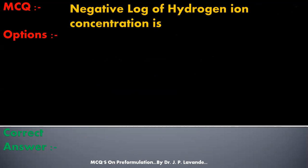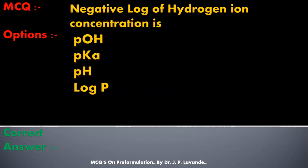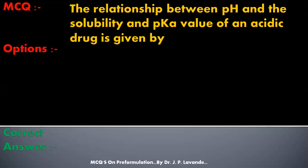Next question: negative log of hydrogen ion concentration is — options are: pOH; pKa; pH; or log P. The correct answer is pH — the negative log of hydrogen ion concentration is pH.